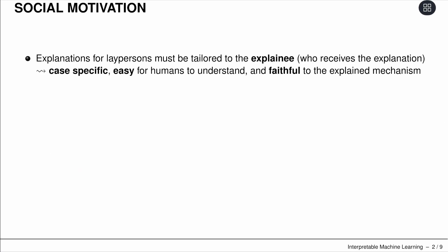There's also social motivation. Often these explanations are meant for laypersons — not to understand the full model, but to explain particular decisions for particular predictions. That means explanations must be tailored for the one receiving them. They should be case-specific, easy for humans to understand, and faithful to the explained mechanism.